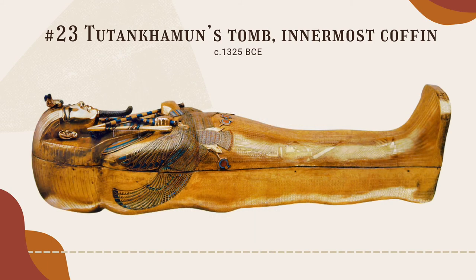The discovery of King Tut's tomb just had its 100th anniversary on November 4th. On that day in 1922, Howard Carter uncovered one of the greatest finds in history. According to his notes, recorded in The Treasures of Tutankhamun published by the Metropolitan Museum, Carter wrote: 'At first I could see nothing. The hot air escaping from the chamber caused the candle flame to flicker, but presently, as my eyes grew accustomed to the light, details of the room within emerged slowly from the mist. Strange animals, statues, and gold. Everywhere, the glint of gold.' After a pause, Carnarvon asked, 'Can you see anything?' And I replied, 'Yes, wonderful things.'